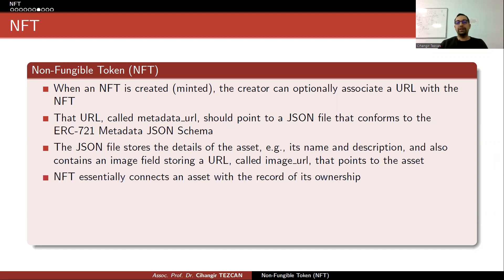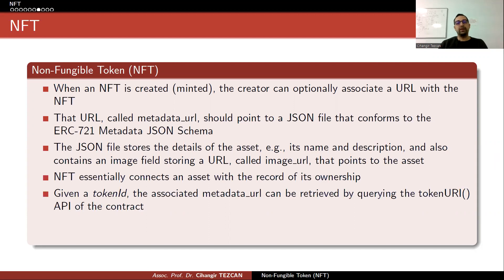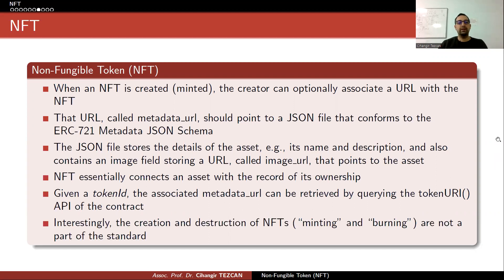An NFT essentially connects an asset with the record of its ownership. Given a token ID, the associated metadata URL can be retrieved by calling the tokenURI API of the contract. Interestingly, the creation and destruction of NFTs — minting and burning — are not part of the standard, so it depends on the marketplace.